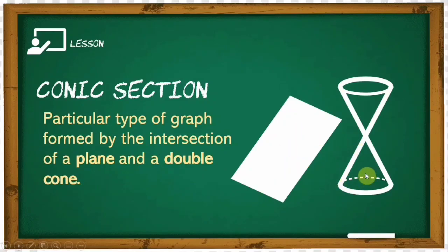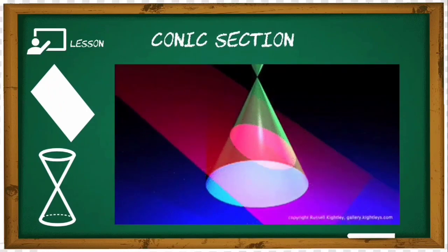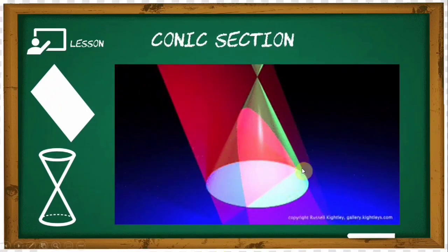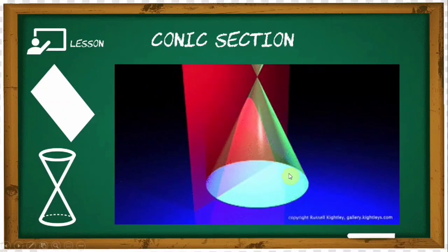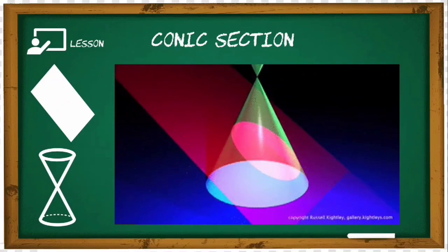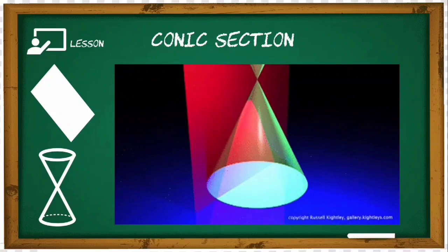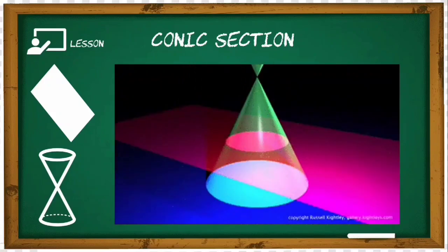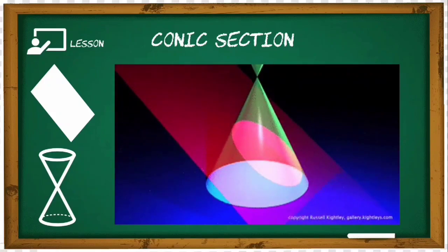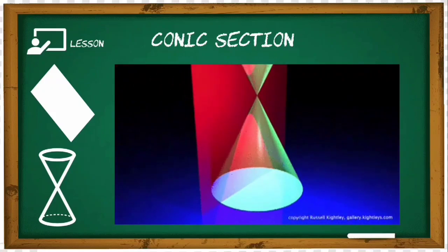The double cone and the plane are very important in making the different types of conic sections. Just like what you see on your screen, images or graphs are formed inside the double cone when the plane intersects it. Always remember that the shape of the conics depends on the angle of the plane.